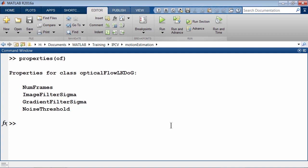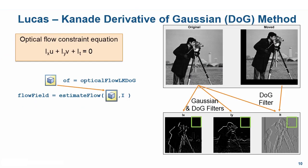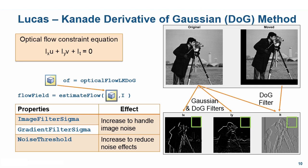Note that we have not talked about all the properties applicable for each algorithm. We can use the properties command on any of these objects to get a full list of all supported properties. We talked about the Lucas-Kanade derivative of Gaussian method and the noise threshold property, which can be increased to reduce noise effects. The filters in this method can be configured using the imageFilterSigma and the gradientFilterSigma parameters, making the algorithm more robust to noise and allowing operation with a reduced noise threshold.